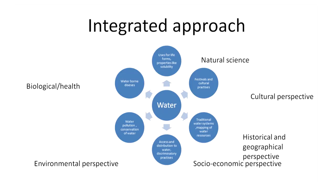Then the cultural aspects — we can say festivals related to water and what kind of cultural practices we follow. Then the historical and geographical aspects: traditional water systems, traditional water systems in forts in India, mapping of water resources — these come from the history and geographical aspect of water. Irrigation practices followed by people in our country are also geographical aspects. Then comes the socio-economic perspective — like access and distribution of water. How is water distributed? Is access to water available for everybody? One has to think about it in a deeper sense.